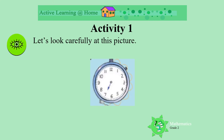Activity 1. Let's look carefully at this picture. First, let's talk about what we see in the picture. We see a clock. We see numbers on the clock.